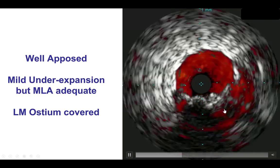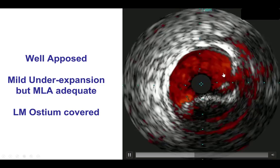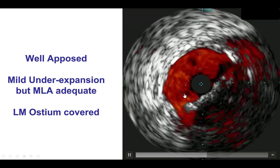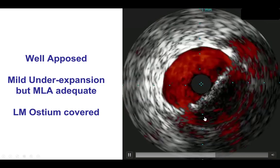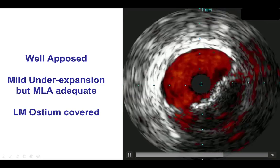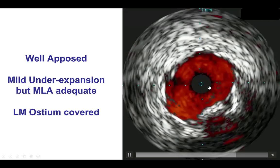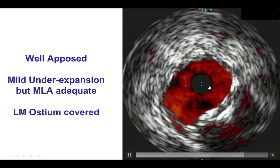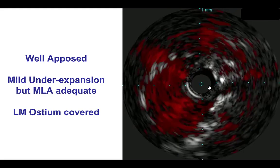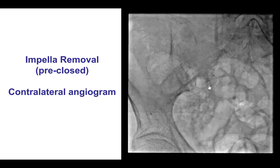Potentially we could have gone at even higher pressures to try to expand it even more, but the area was adequate and the ostium was well covered as well, even though the shape of the vessel was more oval. We did have adequate coverage of the ostium.